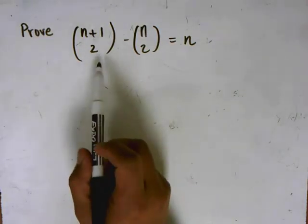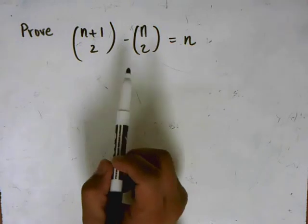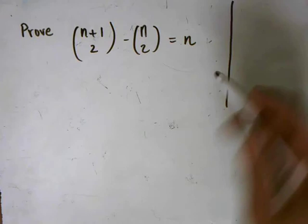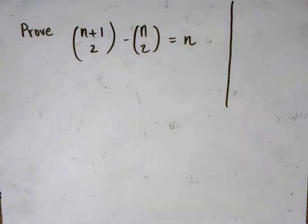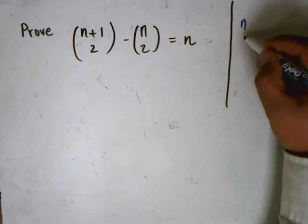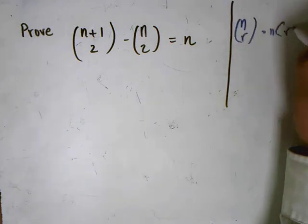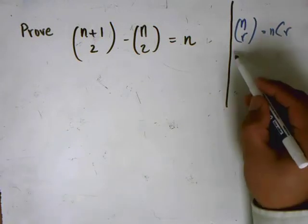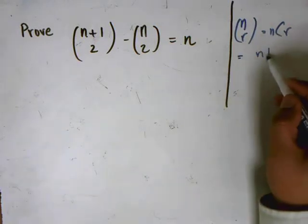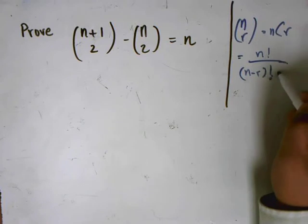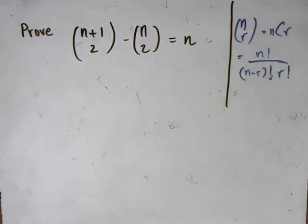This notation here really means n plus 1 choose 2 and n choose 2. As a side note, when you have something like n choose r, that's written in a different notation as nCr, and that's equal to n factorial over n minus r factorial times r factorial. This is really just a reminder more than anything else.